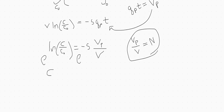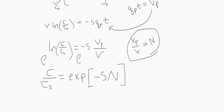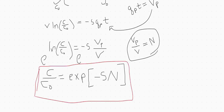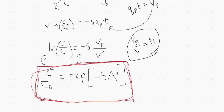Exponentiating both sides gives the final solution: c/c₀ = exp(−S·N). This expression predicts the solute concentration over the course of diafiltration. If sieving S equals zero — no passage of your solute across the filter — then exp(0) equals 1, so c/c₀ equals 1: the concentration doesn't change.